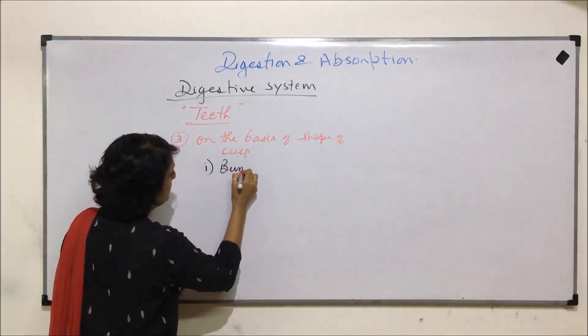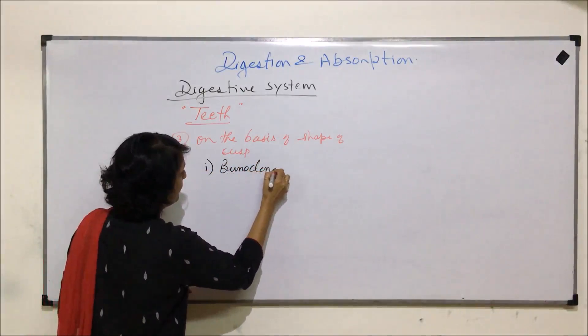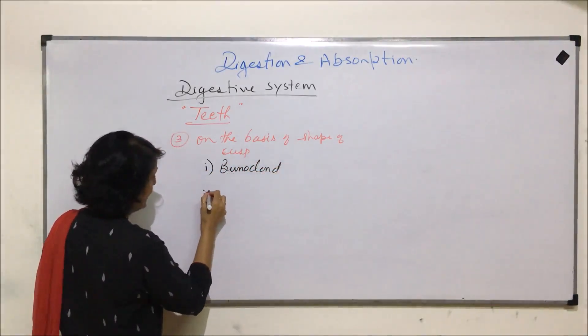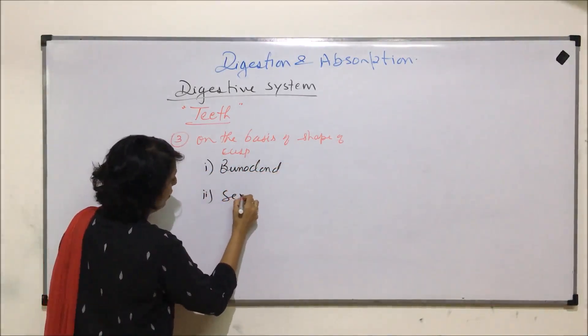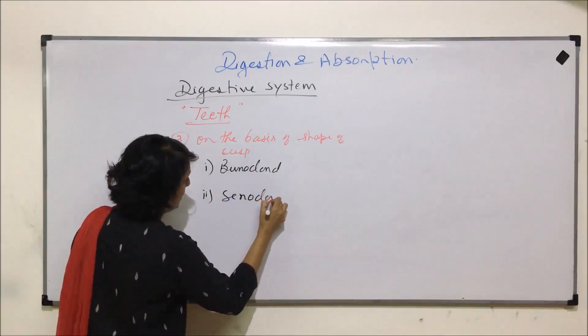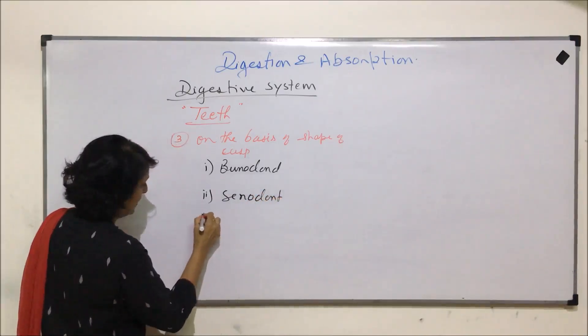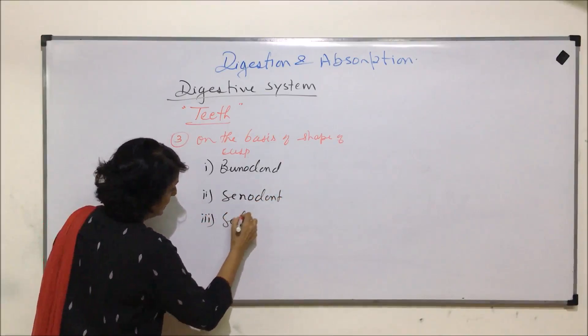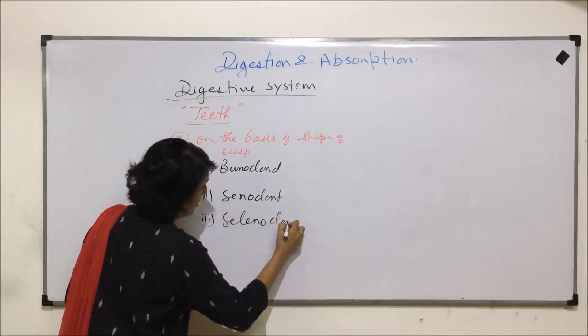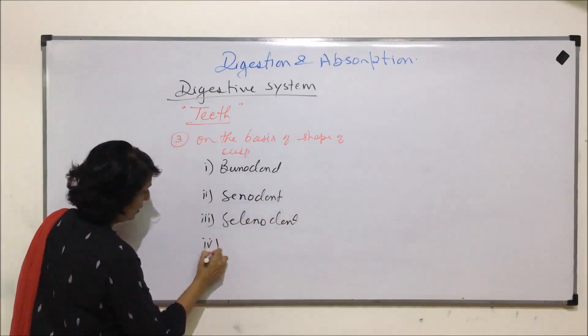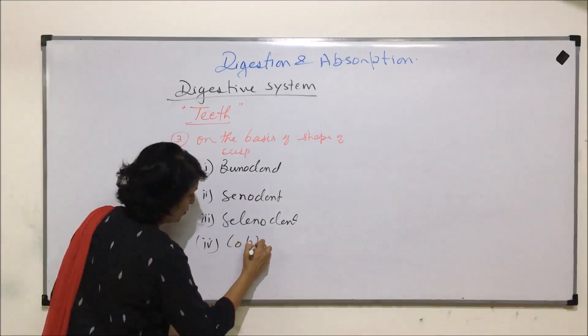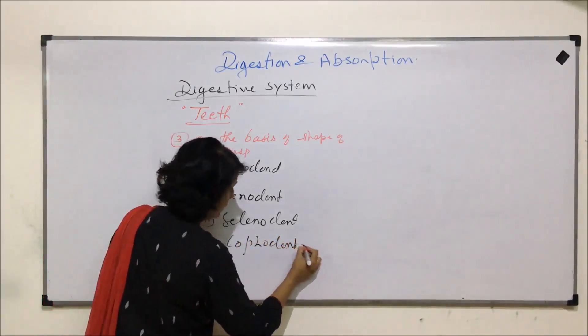First is known as bunodont, then second cenodont, third selenodont, and fourth lofodont. These are the four categories.